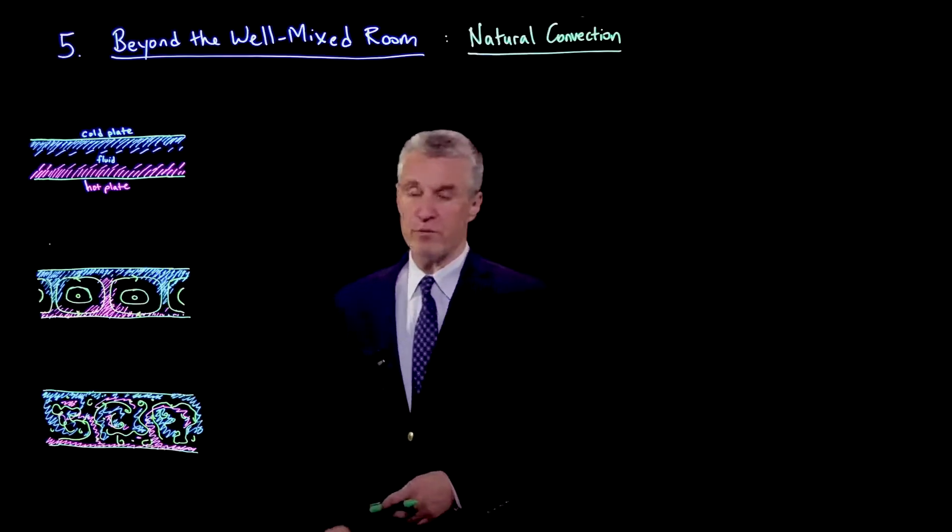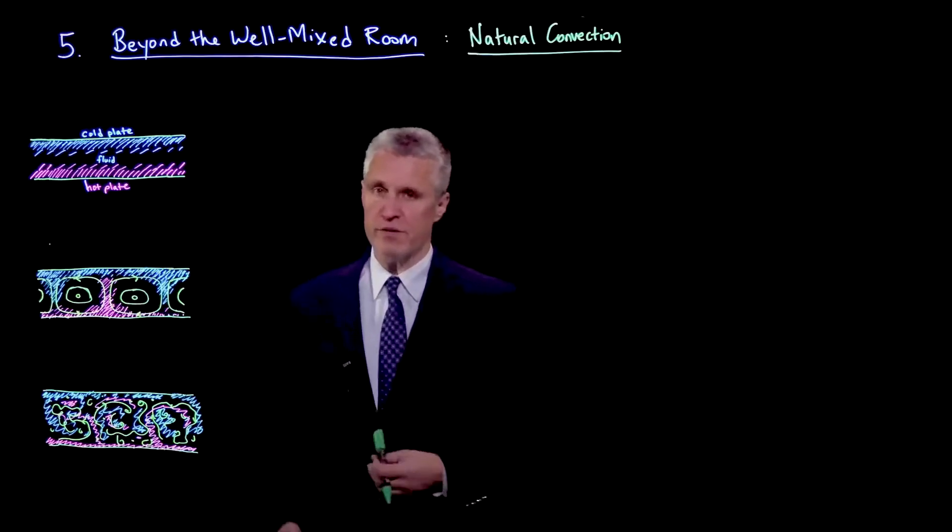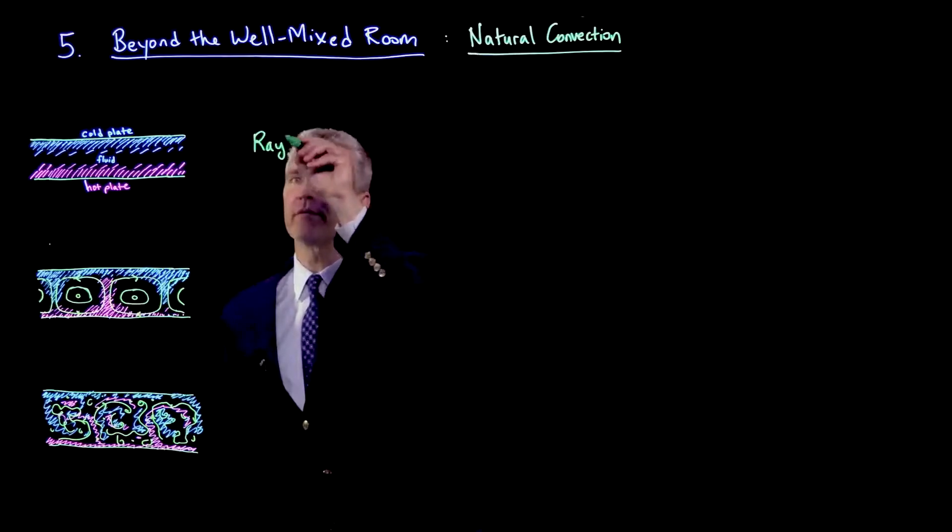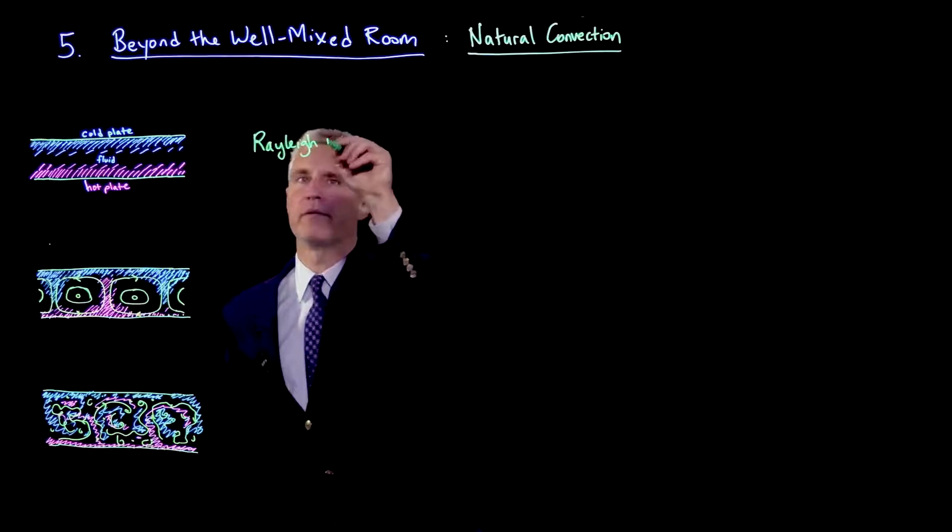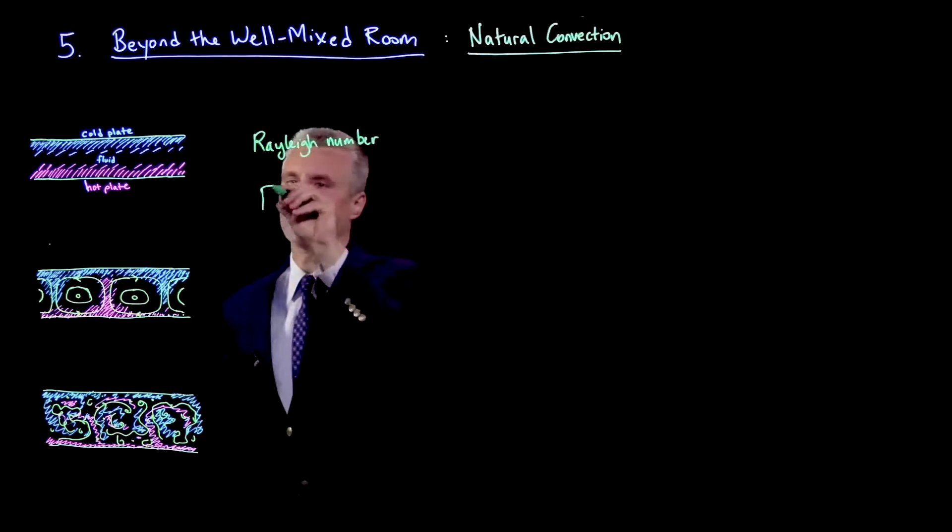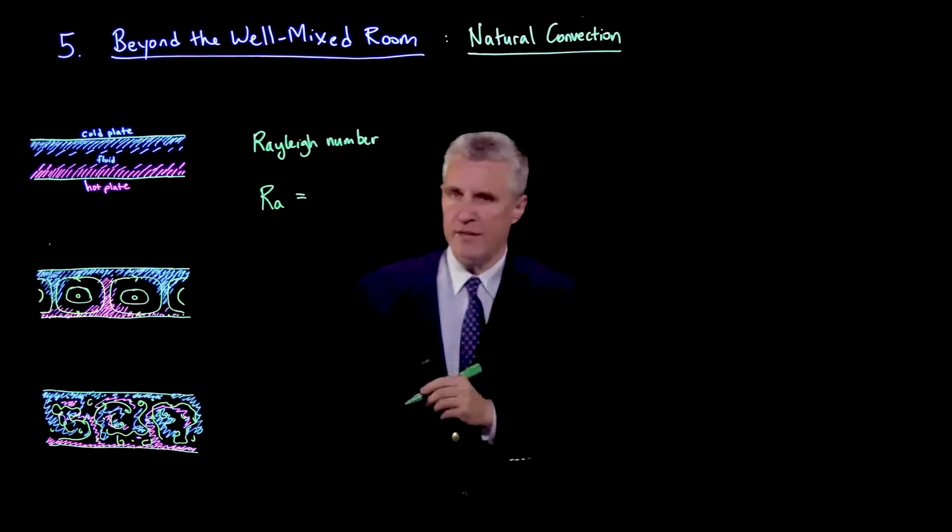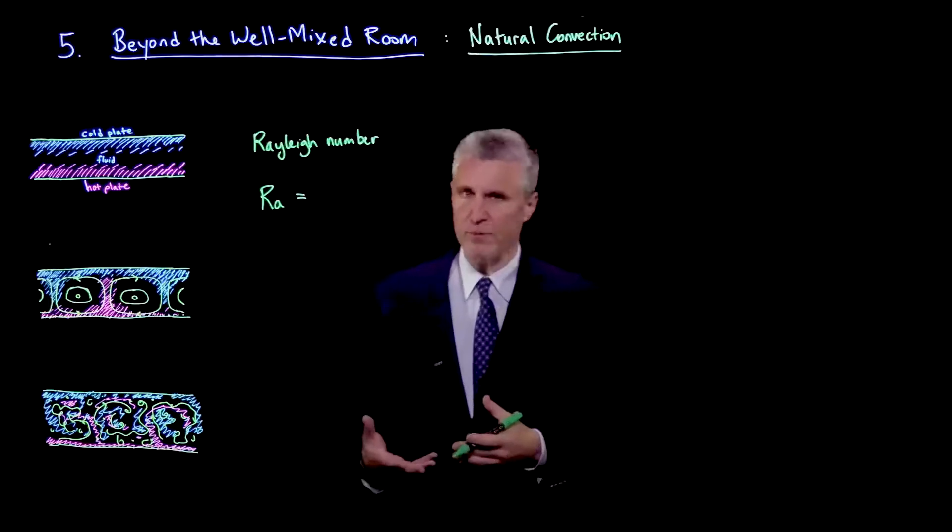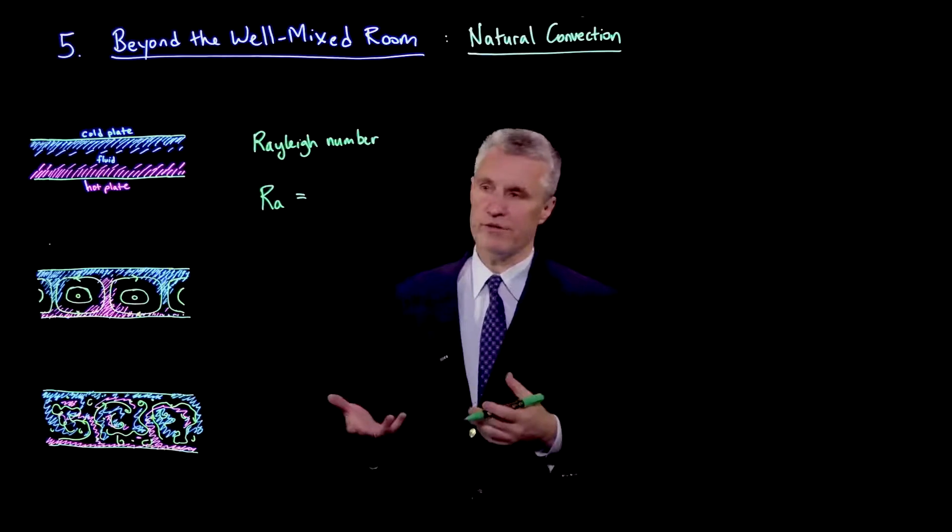There's another dimensionless number which controls the appearance and strength of such flows, which is the Rayleigh number, written Ra. This is also a combination of physical properties of the fluid plus the geometry.